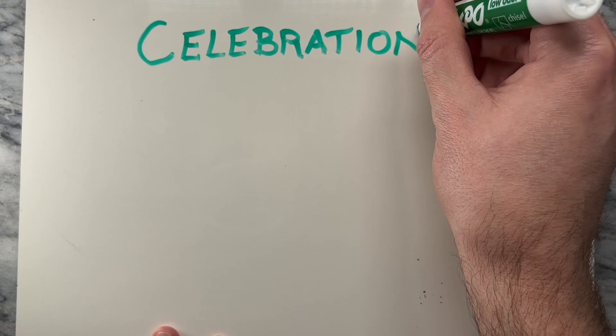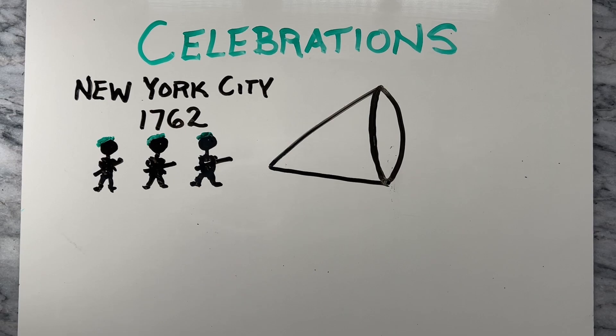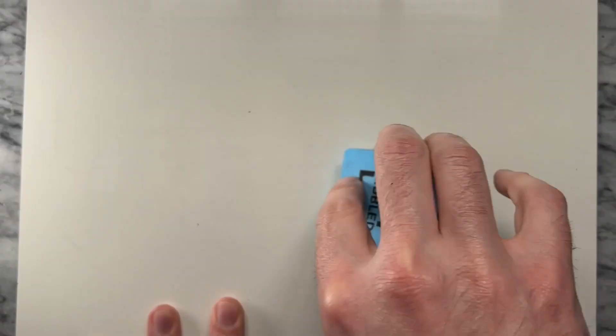The first St. Patrick's Day parade took place in New York City in 1762, when Irish soldiers in the British army marched through the city to celebrate their Irish heritage. The holiday has since evolved into a celebration of Irish culture and heritage and is now observed by people of all backgrounds and nationalities around the world, with parades, festivals, and other cultural events.